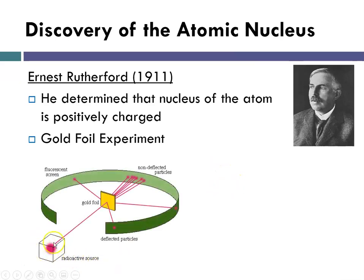He had a radioactive source of polonium, and the polonium gives off positively charged particles called alpha particles. He shot this beam of positive particles at a piece of gold foil surrounded by a fluorescent screen. He expected that since atoms were mostly empty space, the beam would go straight through the gold foil.